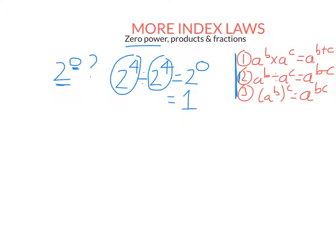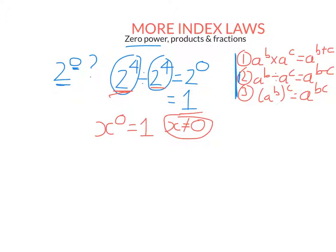But two to the power of four is just 16. Anything divided by itself is equal to one, except for zero. This would work if we changed it to three to the power of four or four to the power of four. So for that reason, anything to the power of zero is one. There's one exception though: anything non-zero to the power of zero is one. You can't have zero to the power of zero because that would be zero divided by zero.